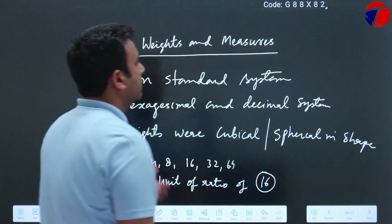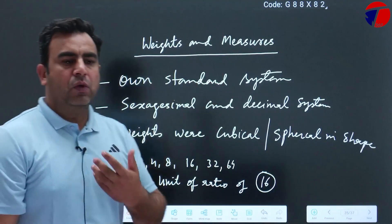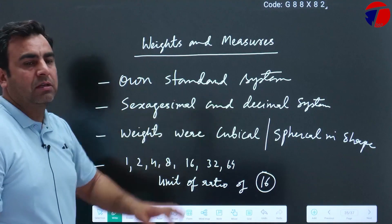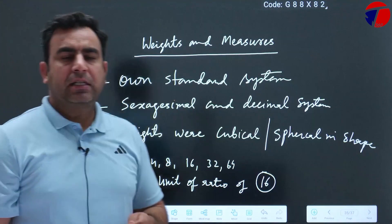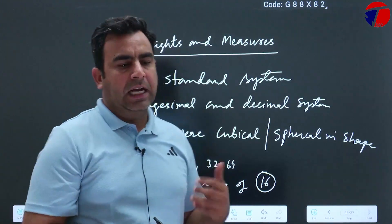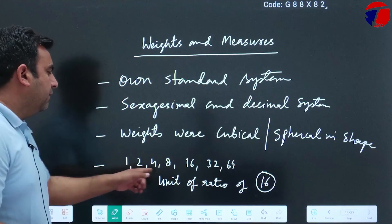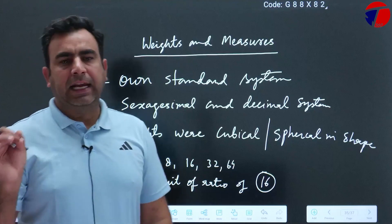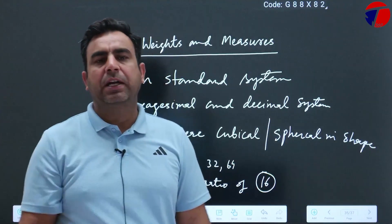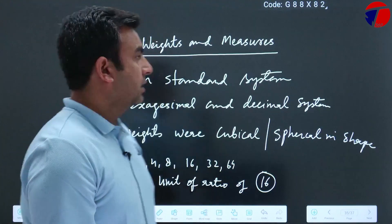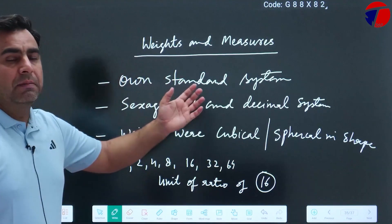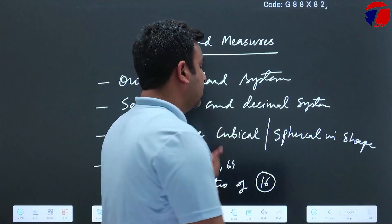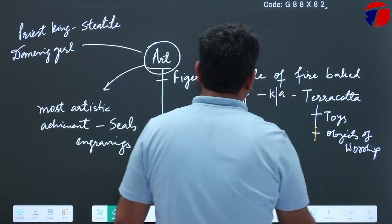Next is weights and measures. They had their own standard weights and measures - hexadecimal and decimal system was followed by them. The weights' shape was cubical and spherical, and generally they followed the formula of sixteen ratio: 1, 2, 4, 8, 16, 32, 64, 128, 256. This is the way followed in Indus Valley civilization.